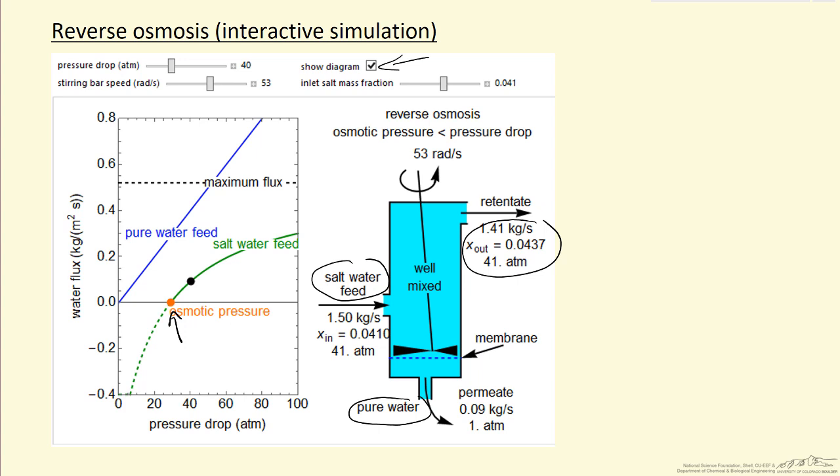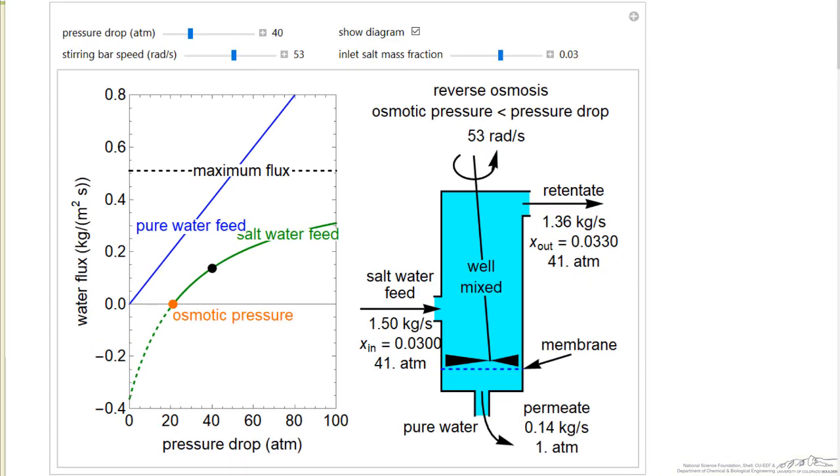Let's look at the actual simulation. If I increase the pressure drop, you'll notice the black dot moves, but also notice I'm changing the numbers on the right side. This diagram on the right corresponds to conditions for the black dot.